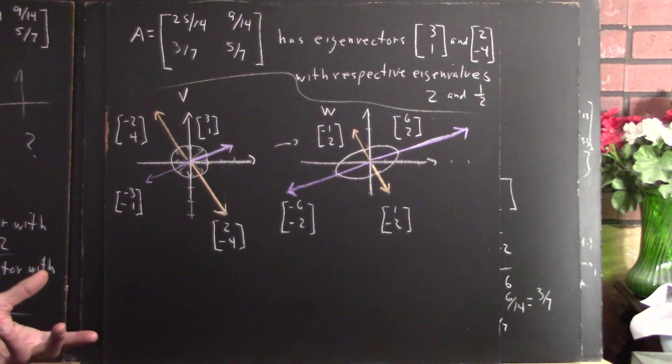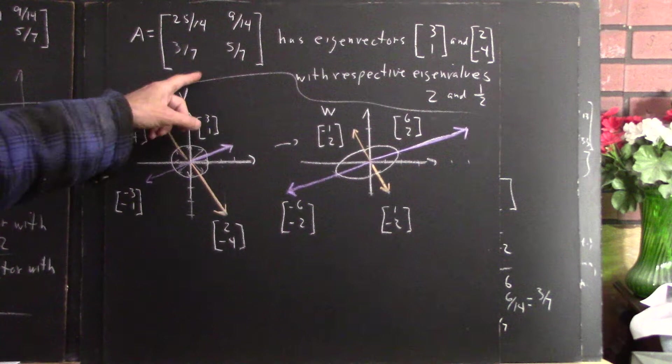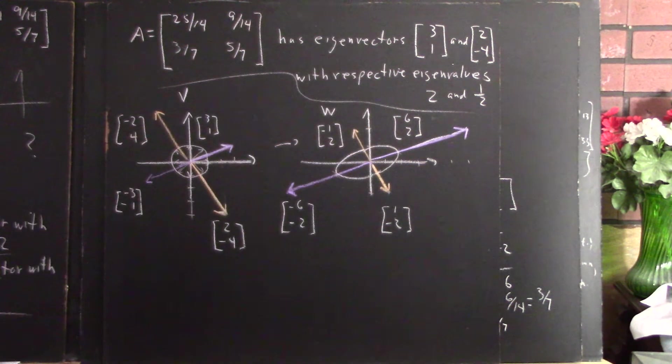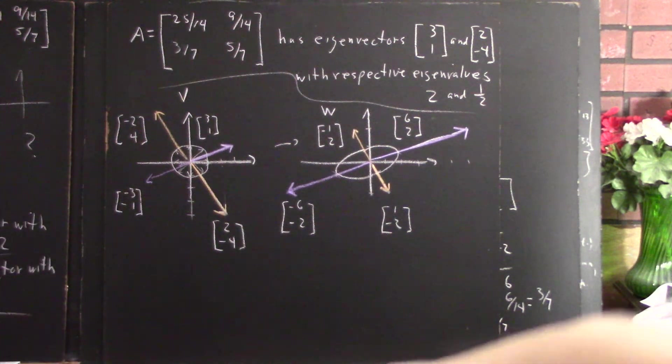Now, the next question is, if we were given this matrix, how in the world would we find eigenvectors and eigenvalues? So that's another conundrum that we want to approach. So we'll do that next.